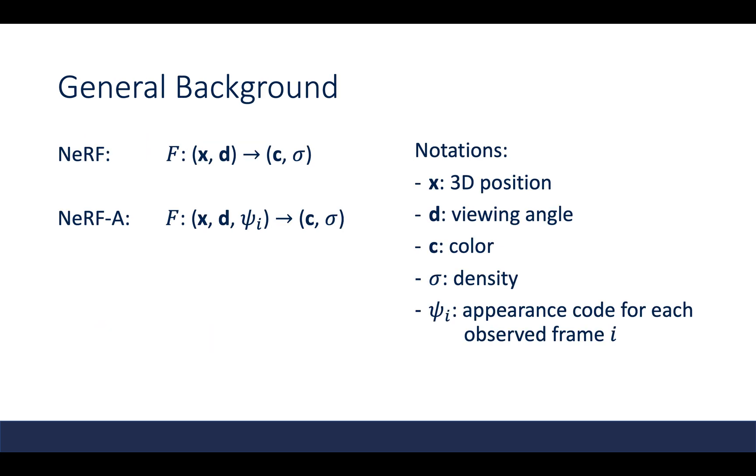The general background is that NeRF takes as input 3D coordinates and a viewing angle and maps it to a color and density, while the NeRF-in-the-Wild model, denoted NeRF-A, takes an additional input, the appearance code, and maps it to the color and density.